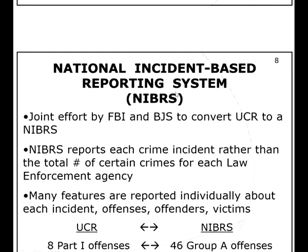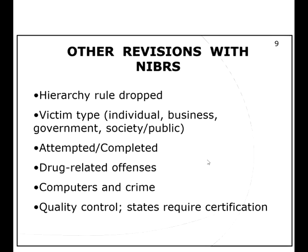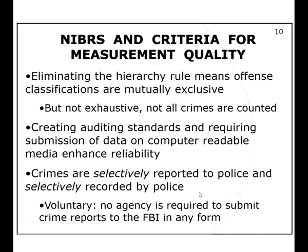To circumvent some of the limitations of the UCR, they've also created what is known as the NIBRS data. NIBRS has 48 Group A offenses compared to the Part 1 offenses in the UCR. It's incident-based and they're really trying to use this data more, although even fewer states and entities report to NIBRS than to the UCR. Some other revisions: the hierarchy rule has been dropped, victim type information is included, attempted versus completed distinctions are made, drug-related offenses have more coverage, and computers and crime is a new category.